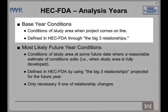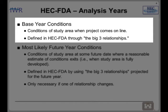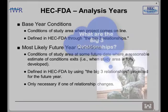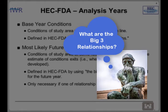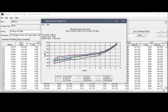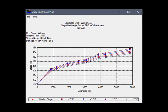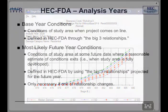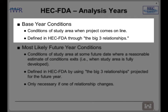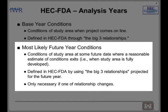In Workshop 4, the base year conditions have been completed for you — the base year data has been imported and the big three relationships have been defined. The big three relationships are: first, the exceedance probability, also known as the discharge probability or frequency curve; second, the stage discharge or rating curve; and third, the structure stage damage. In Workshop 2 you generated the first two relationships for the base year, and in Workshop 3 you generated the third. In Workshop 4, it is your goal to complete the big three relationships for the most likely future year.